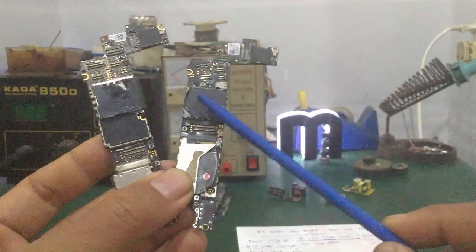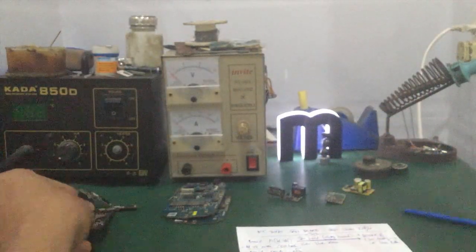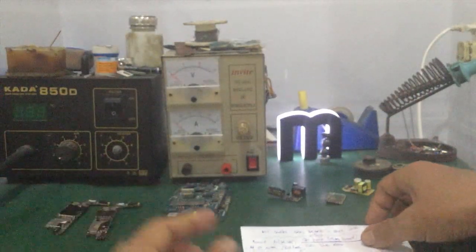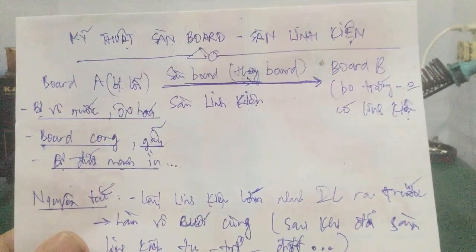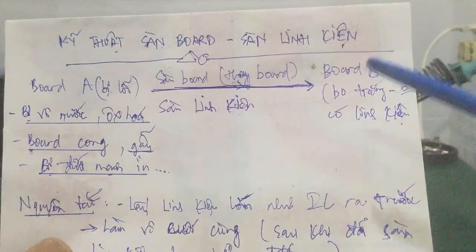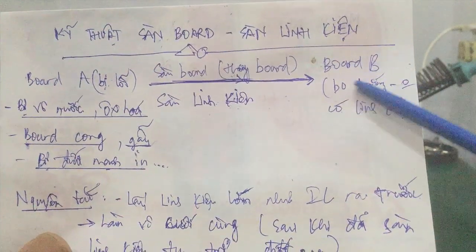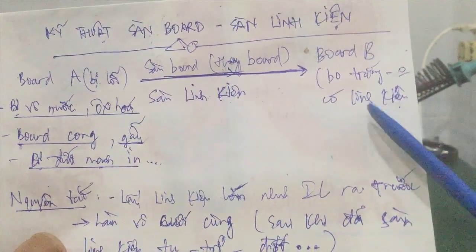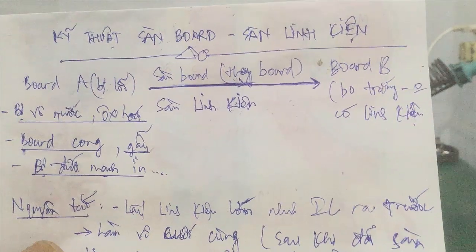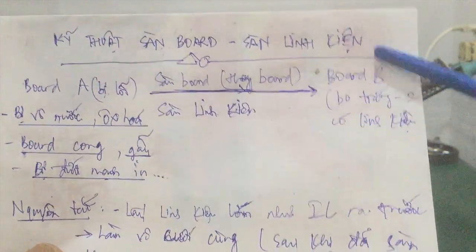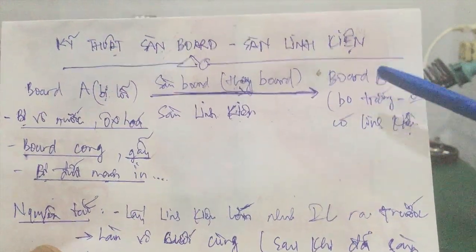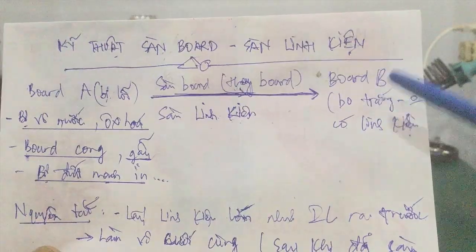We have Bo A and Bo B. Bo B is the blank board (bo trắng) that has no components inside — or a board that still has no components but is non-functional. For example, if you have a mobile device with a CPU upload issue.